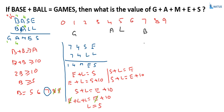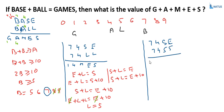We have found G, A, L, and B. Now substituting L equals 5 into the equation: BASE becomes 7, 4, S, E and BALL becomes 7, 4, 5, 5. The sum is 1, 4, M, E, S. So we have S plus 5 equals E and E plus 5 equals S. The difference between S and E is 5.